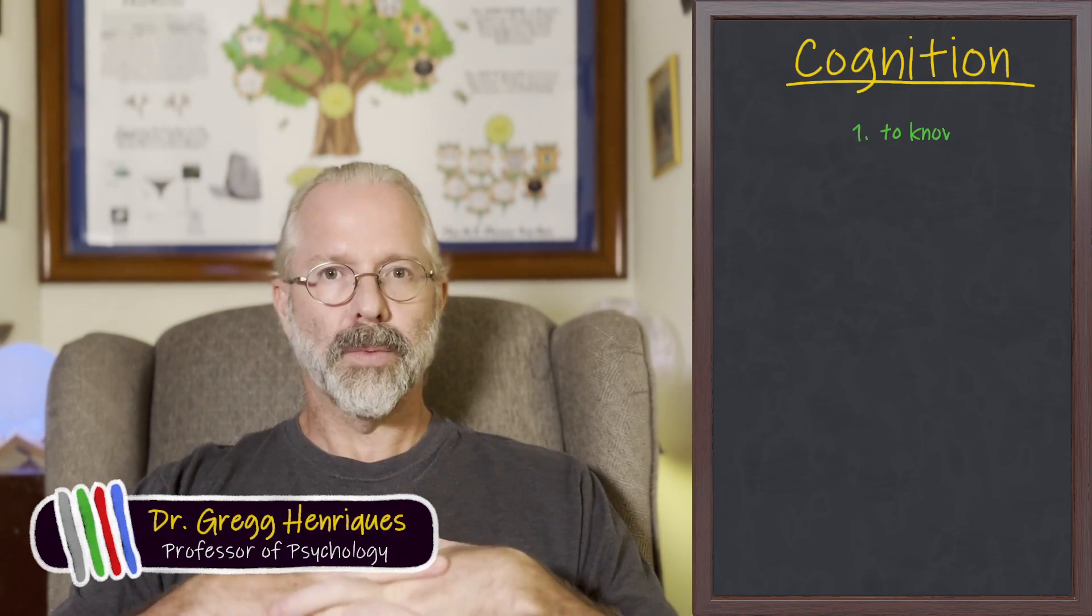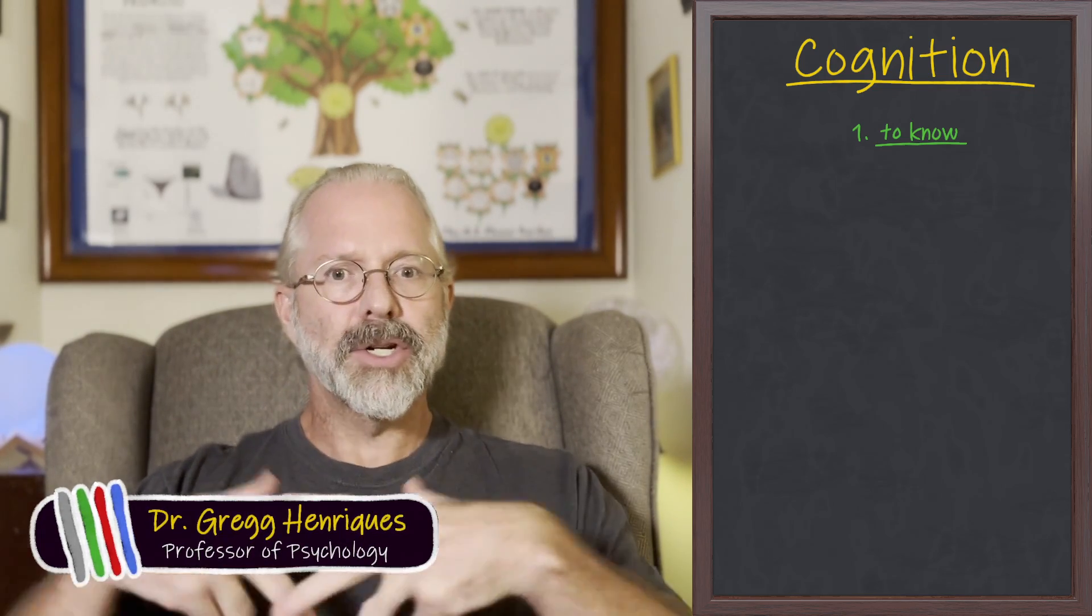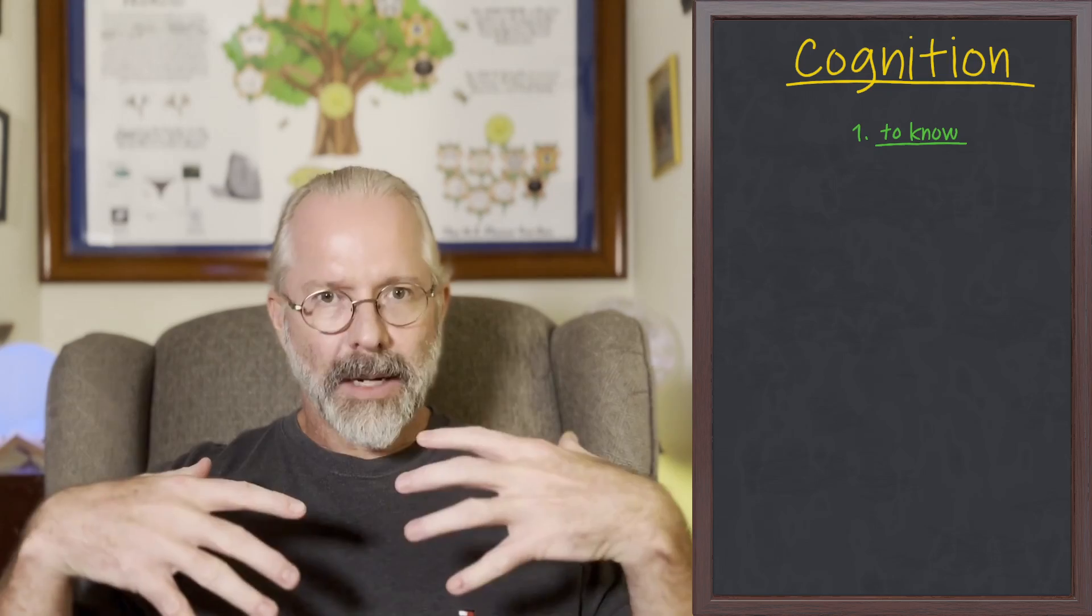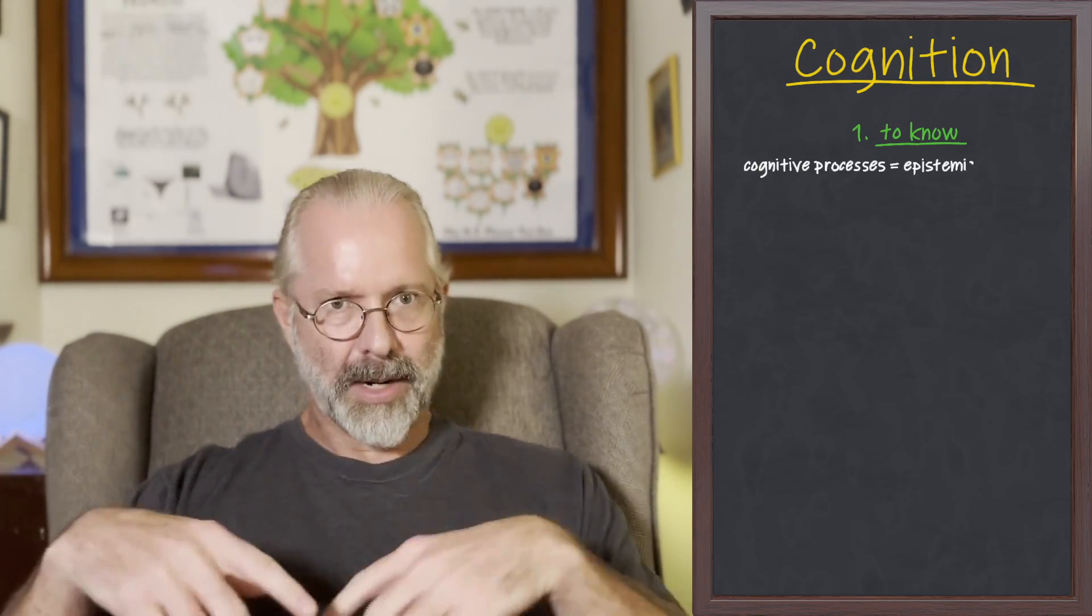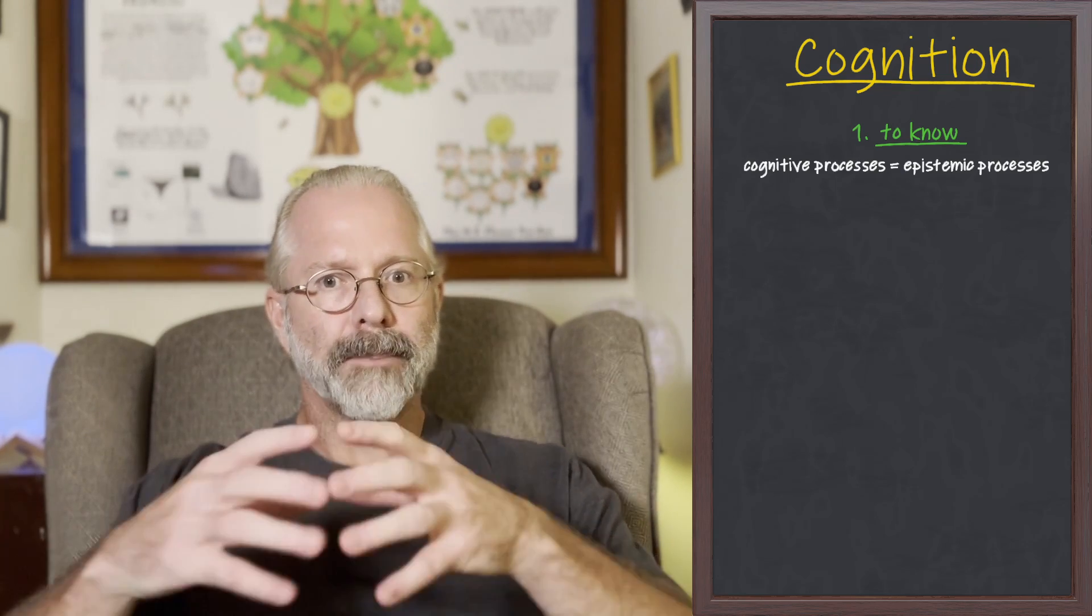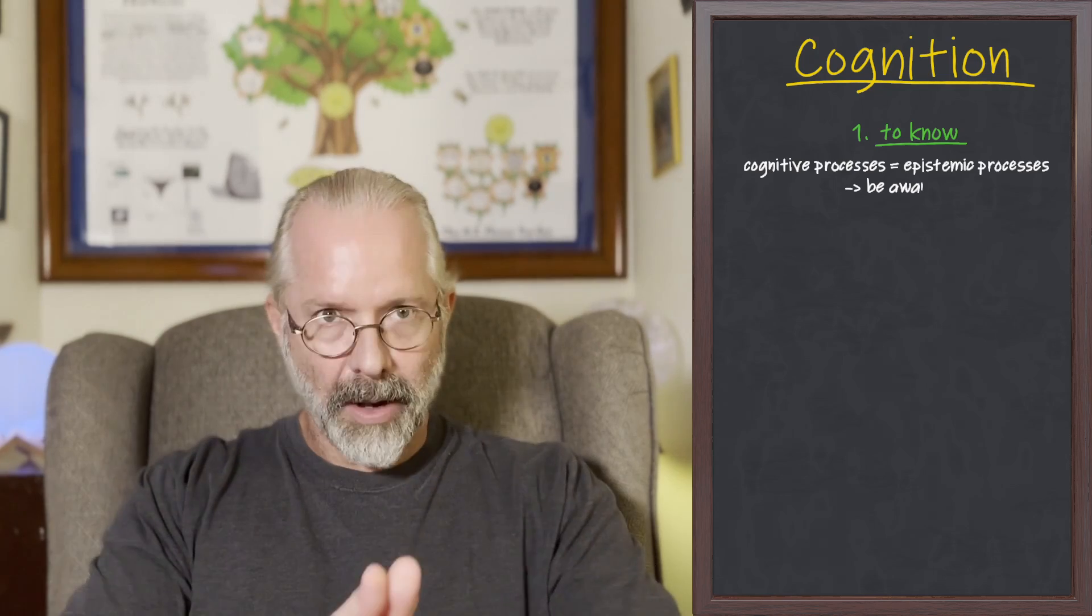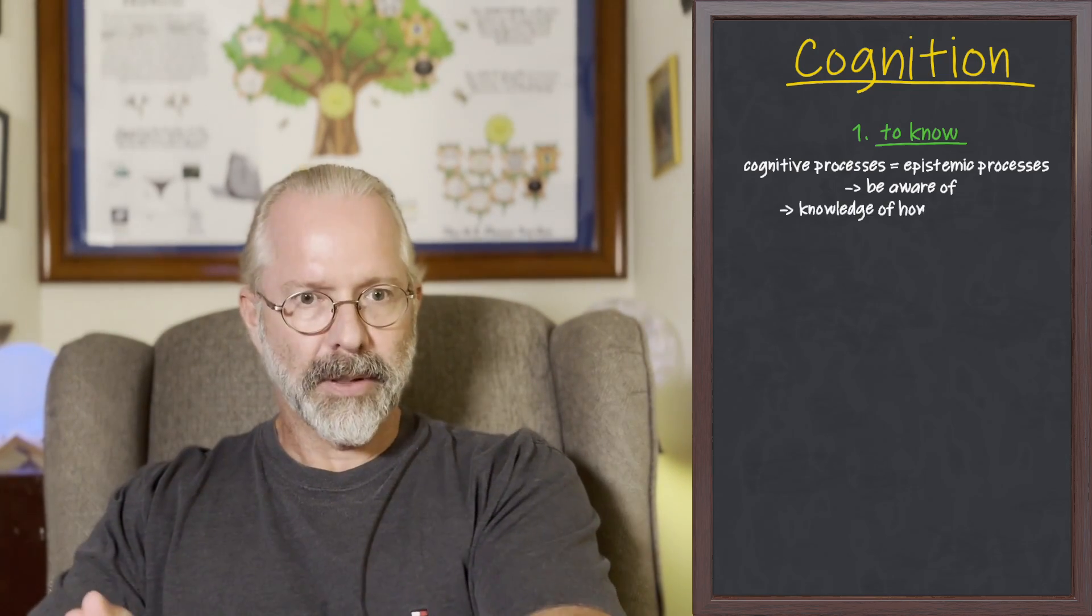We can start by explicitly noting that cognition has two distinct meanings. One is the word to know. For example, to be cognizant of something is to know about it. And we can say that cognitive processes are epistemic processes, where epistemic process involves knowing about things. So when we think of cognition as knowledge, it means to be aware of and have knowledge of how to do things.